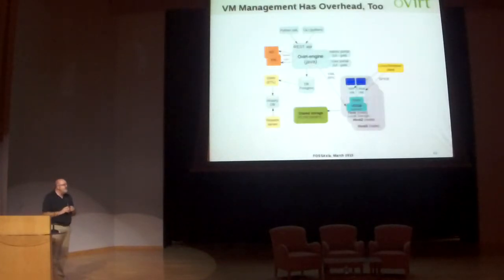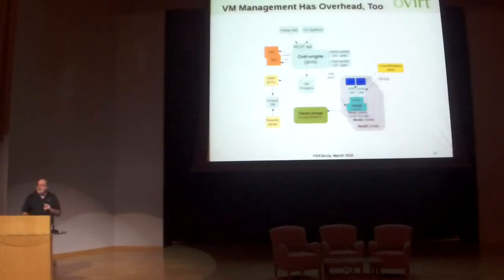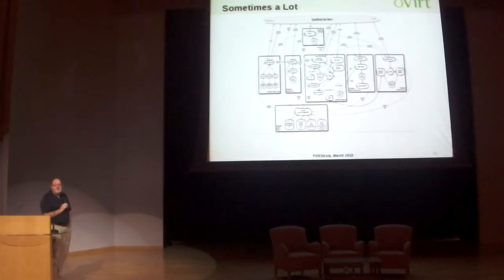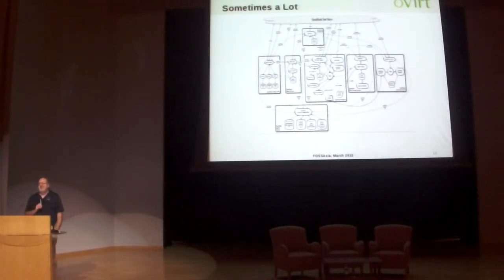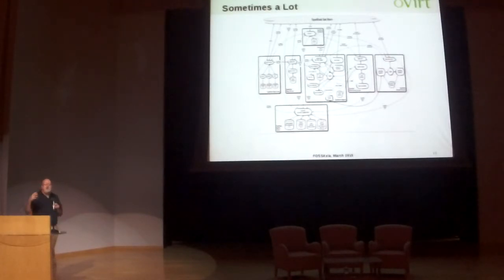In oVirt, this is a diagram of how oVirt kind of looks, and it's relatively complex — not something that you would want to mess around with too much as far as getting into the guts of it. There's a lot of overhead to virtual machine management. If you look at something like OpenStack, and this is their own diagram — I apologize for the pixelation — that's OpenStack's own architecture diagram, and I've been told this is the simplified one. I'm not dissing OpenStack, but it is a very complicated piece of machinery. It's very complex and it's very overpowered for what a lot of people need.